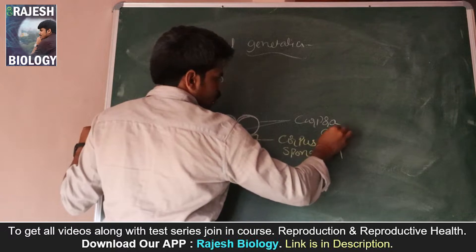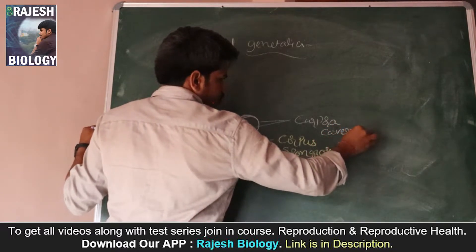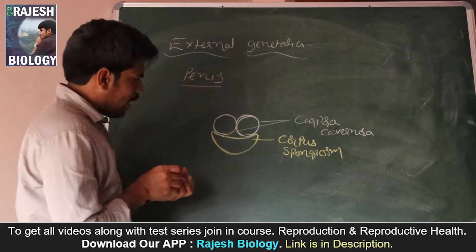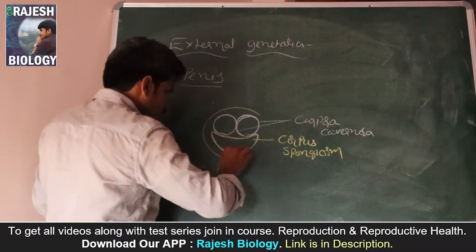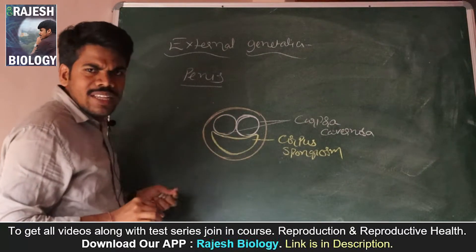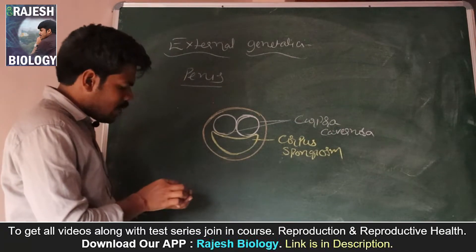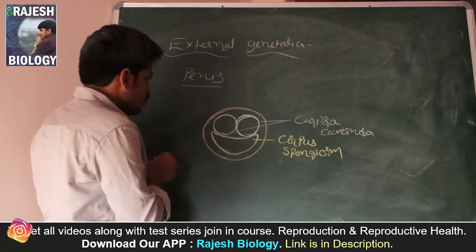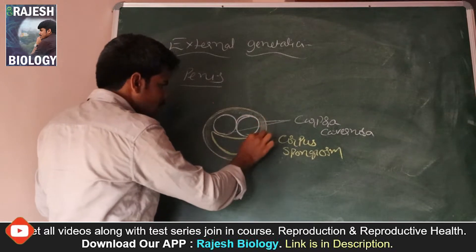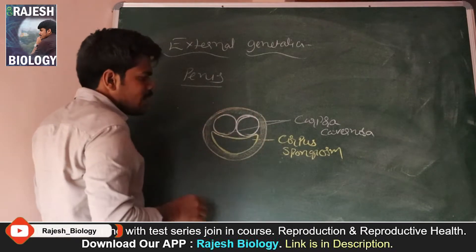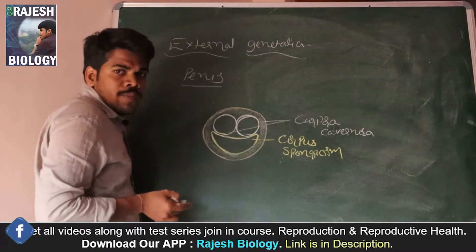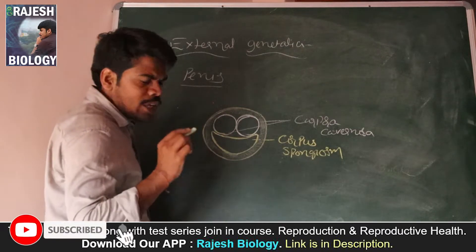These three columns of tissues are covered by skin. Just as in every part of the body there is subcutaneous tissue under the skin, the same type of subcutaneous tissue is present here as well. So the skin and subcutaneous tissue cover these three columns of tissues. This is the internal structure of the penis.